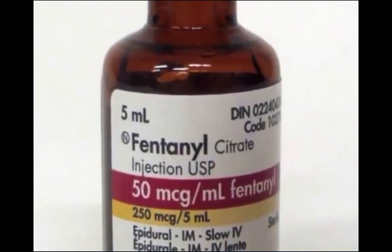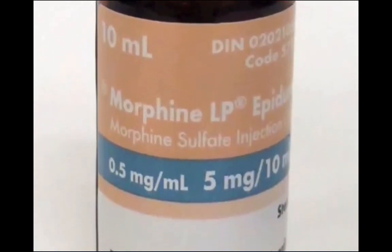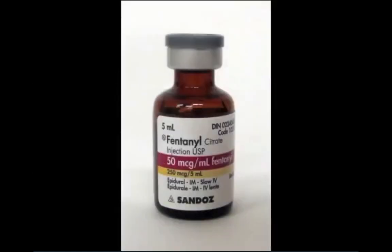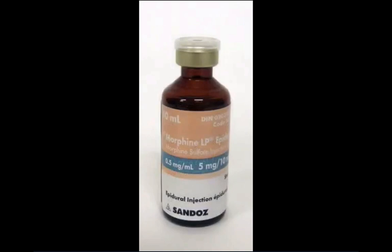Opioids are commonly co-administered with local anesthetics during spinal and epidural anesthesia. Extremely small doses of neuraxial opioids, such as 2 milligrams of epidural morphine, can provide profound and prolonged post-operative analgesia. Neuraxial opioids improve post-operative and labor analgesia and are discussed in chapters 17 to 19 of the Ottawa Anesthesia Primer. The three most common epidural opioids used are fentanyl, morphine, and hydromorphone.